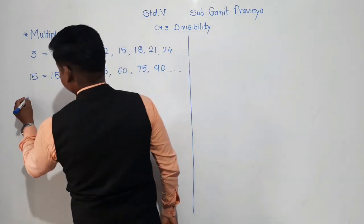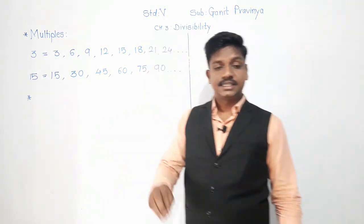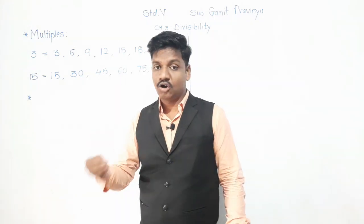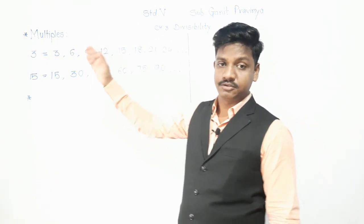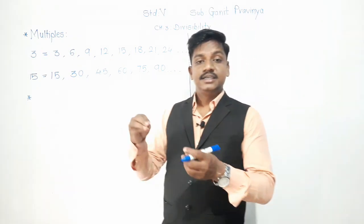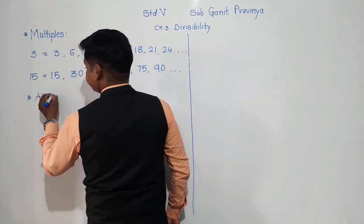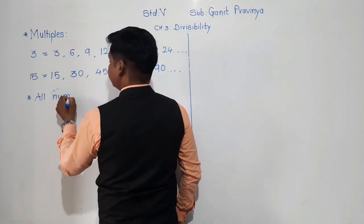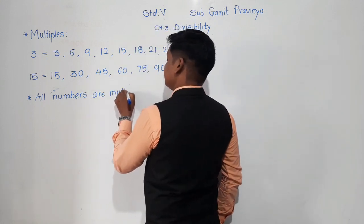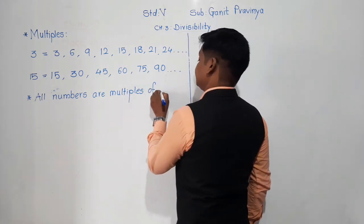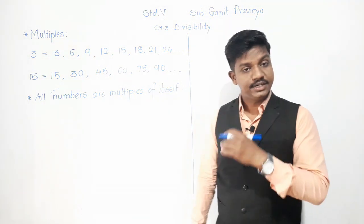Now, what properties can we say about multiples? 3 is a multiple of 3, 15 is a multiple of 15. All numbers are in the table of themselves, so all numbers are multiples of themselves. 15 is a multiple of 15, 3 is a multiple of 3, 100 is a multiple of 100, 25 is a multiple of 25. So all numbers are multiples of themselves.